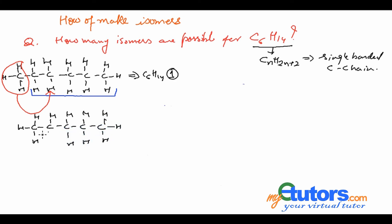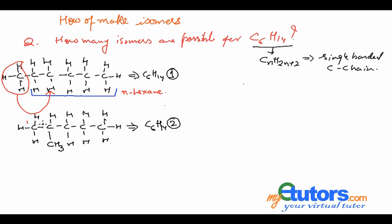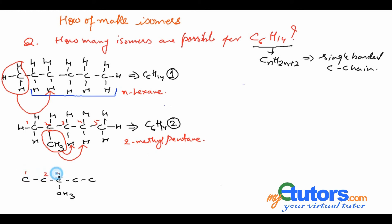To repeat the method: from the parent chain, select a new chain with one carbon atom less. The carbon atom neglected from the parent chain is moved to the second position on the newly formed chain — never on the starting or terminal carbon atoms, because placing it there would give the same chain as before. Now we have a methyl group as a substituent on the newly formed chain, and we can shift this methyl group to all possible positions on the chain.